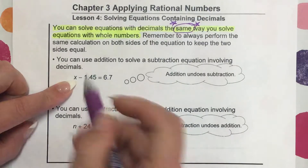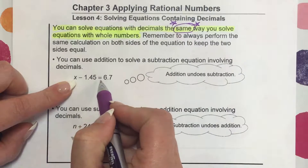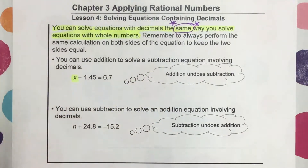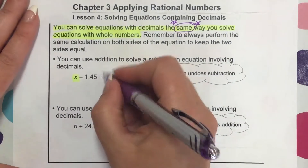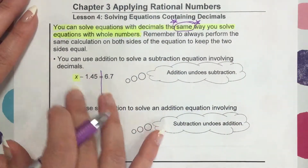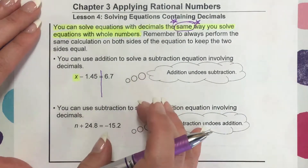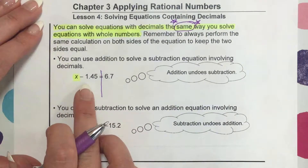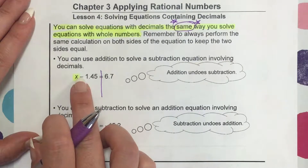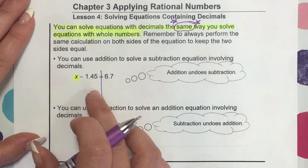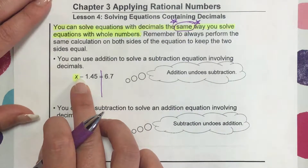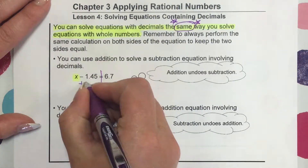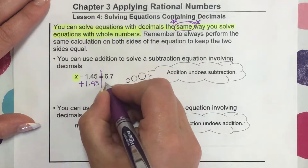Let's look at this first problem: x minus 1.45 equals 6.7. We are trying to get x by itself. There are two sides of an equation — the left side and the right side. In order to figure out what x is, it needs to be by itself. Right now it is not, because there is this negative 1.45. So we have to do the inverse operation of subtraction, which would be addition. We have to add 1.45 to both sides.